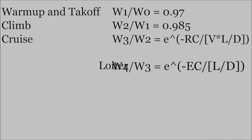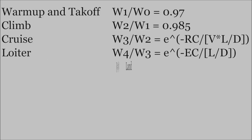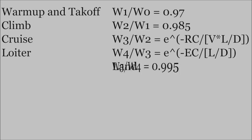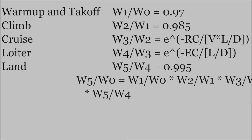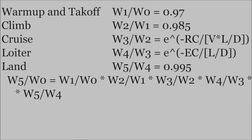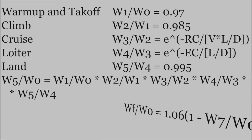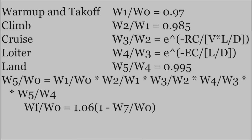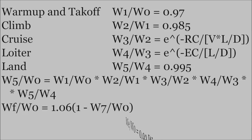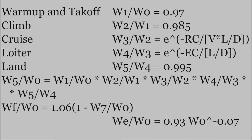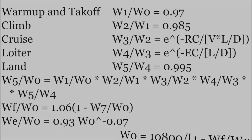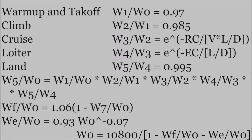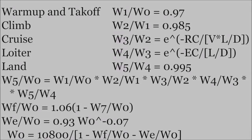In the equation, R is range, C is fuel usage over time, V is velocity, L over D is lift over drag, and E is loiter time. The total fuel usage, which is W5 over W0, is found by multiplying all these values together. WF over W0 is the same ratio, but with 6% added for extra fuel.